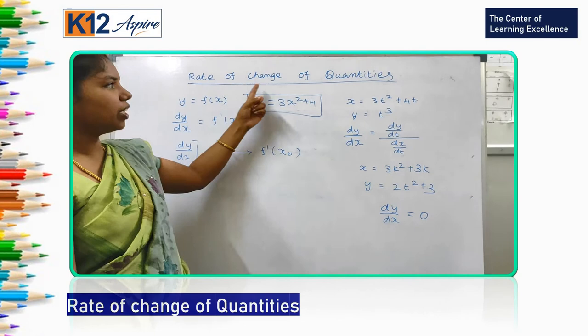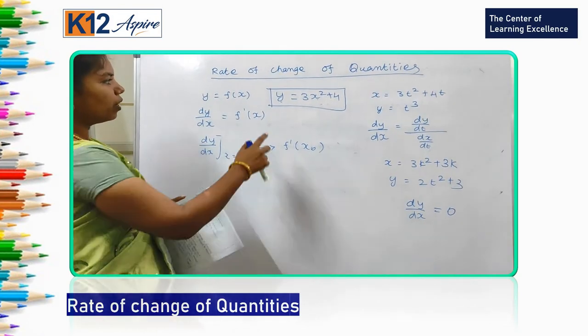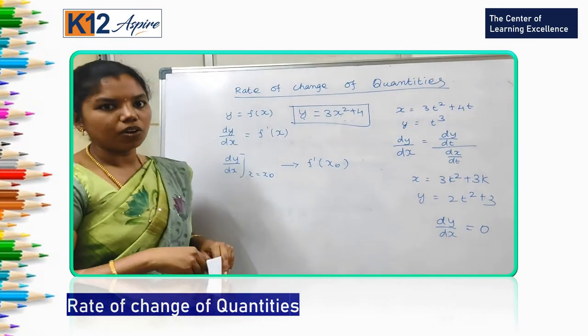First we see about rate of change of quantities. y is equal to 3x square plus 4.